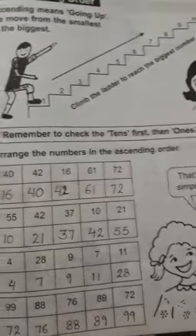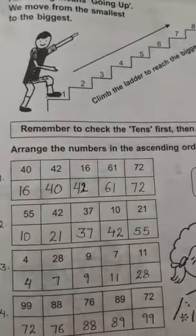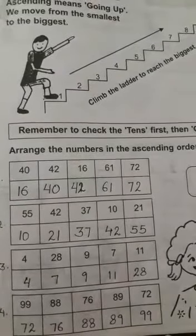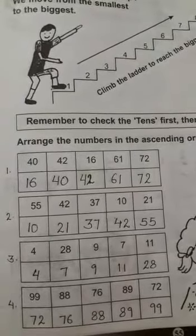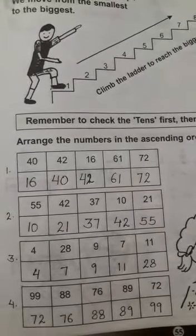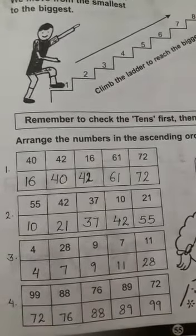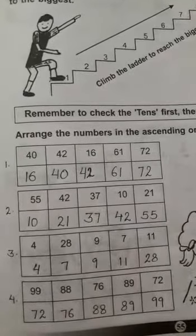Let's start with some examples. In the first example, the numbers are 40, 42, 16, 61, and 72. Here all numbers are two-digit numbers, so we should start comparing the numbers at the tens place. 40 has 4 at its tens place, 42 has 4, 16 has 1, 61 has 6, and 72 has 7.